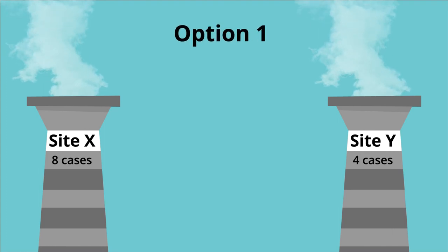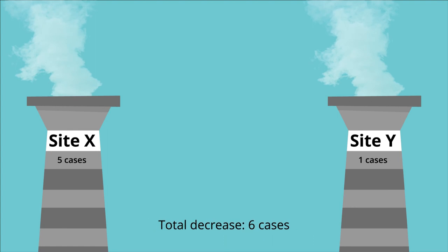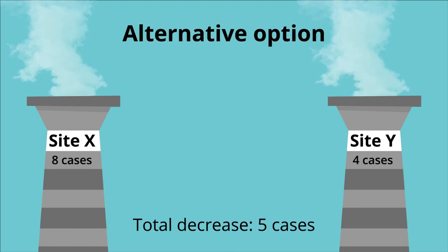In a questionnaire regarding the cleanup options, there were two options that decreased total cancer cases by six across both sites X and Y. There was also a third option that decreased total cases by only five across both sites, but completely eliminated the four cases from site Y.